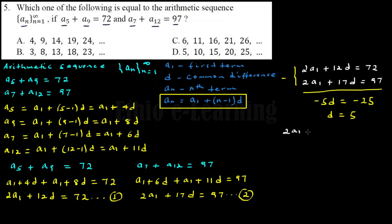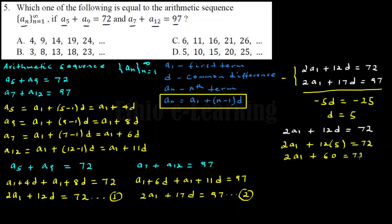Substituting D equals 5 back into equation 1: 2A sub 1 plus 12 times 5 equals 72. So 2A sub 1 plus 60 equals 72, giving 2A sub 1 equals 12, and therefore A sub 1 equals 6.